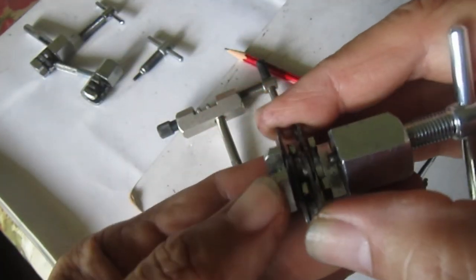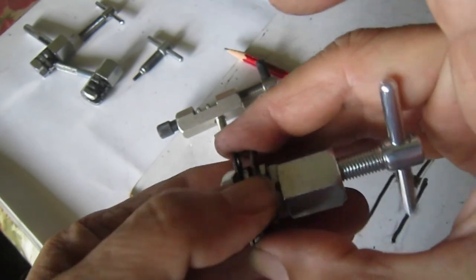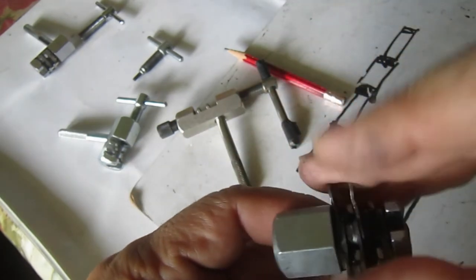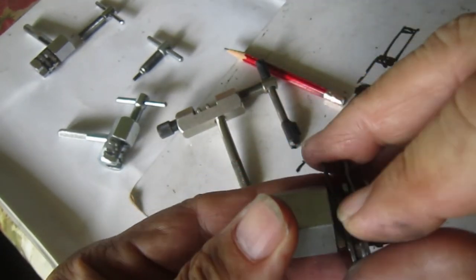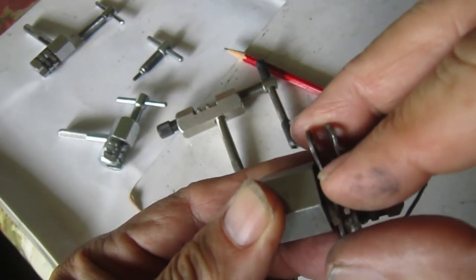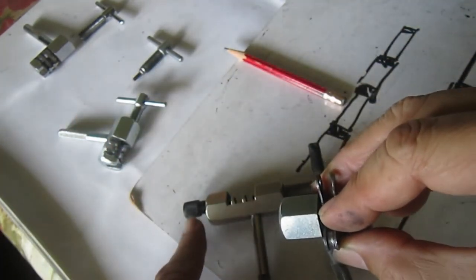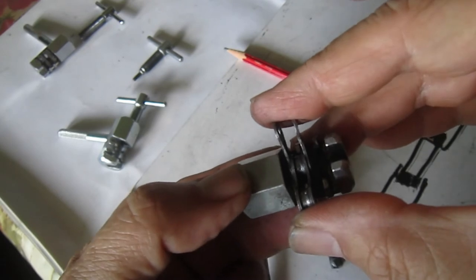So here it's tight, but in some models, see, there's a play. So that screw, this screw, prevents the chain from having play.